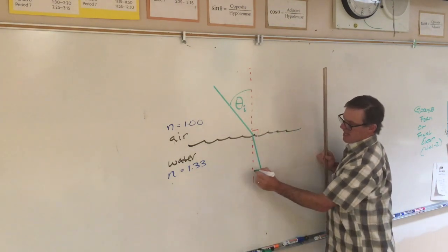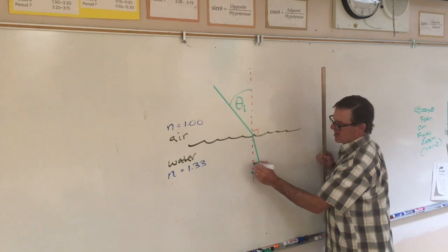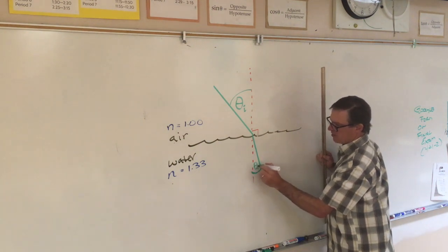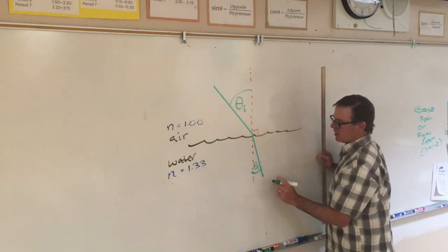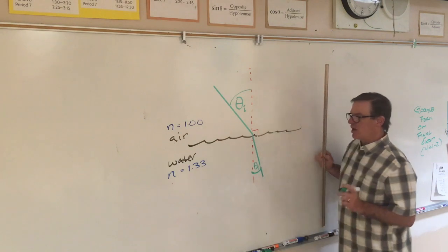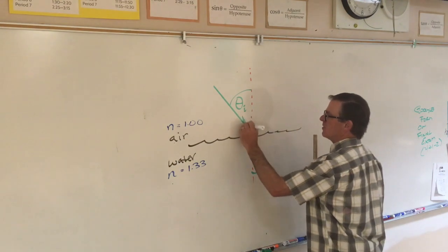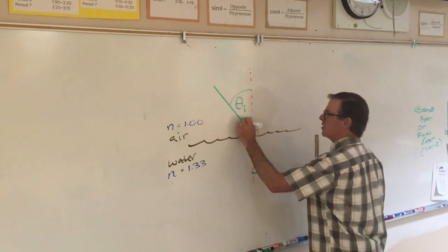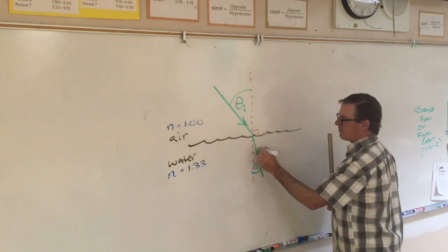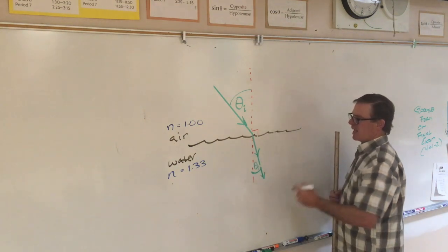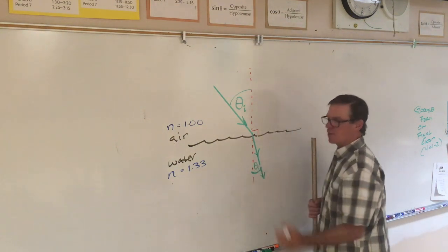So that this angle, theta r, for the angle of refraction, this angle theta r is less than theta i. Now, again, the ray is entering water from air, and it bends toward the normal.